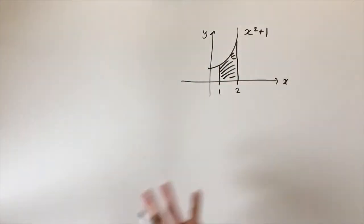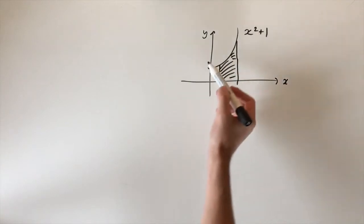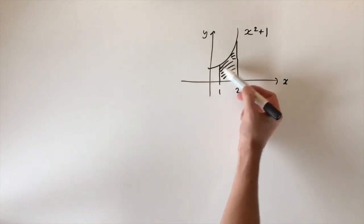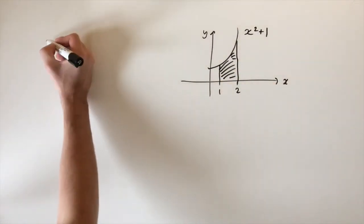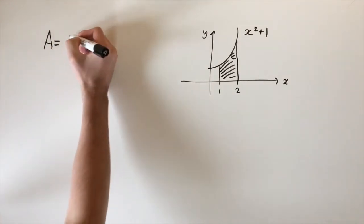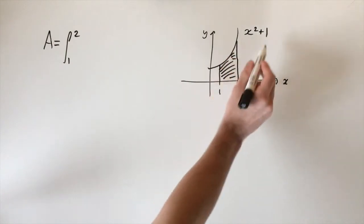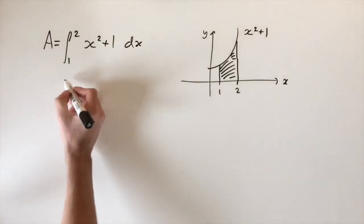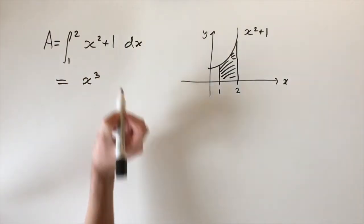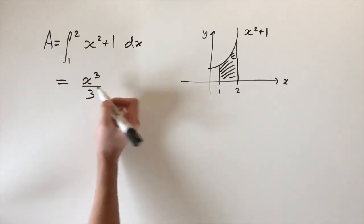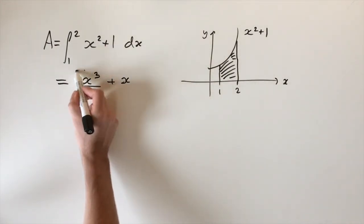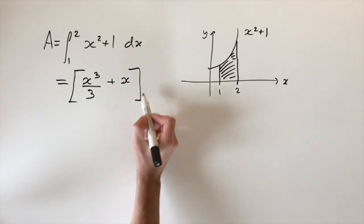For this example we're going to start with the geometric problem and convert it into integration. The question is to find the area under the function x squared plus one, with limits 1 and 2. To calculate this area we just need to integrate this function between these limits. So the area A equals the integral between 1 and 2 of x squared plus 1 dx. We raise the power by 1 and divide by the new power: x cubed divided by 3 plus x. This is the antiderivative of the function. Then we evaluate at the limits 1 and 2.